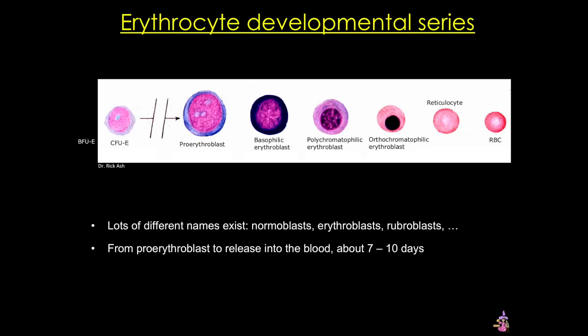Now let's take a look at a couple of the lineages where it is reasonably easy to identify the stages. Remember, this is a continuum, so not every stage will have a name, but there are specific stages that have consistent characteristics and that's what we'll focus on. We'll start with the erythrocyte or red blood cell lineage. This lineage makes erythrocytes or red blood cells, which are also called all sorts of different names — from normoblast, which tends to be a pathologist term, to erythrocytes or red blood cells. Here we're looking at a developmental series from left to right with the mature red blood cell farthest to the right. From pro-erythroblast to release into the blood takes about a week.